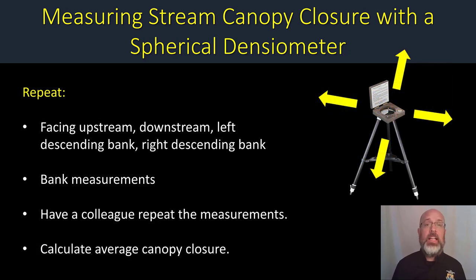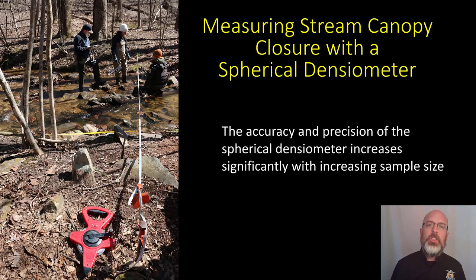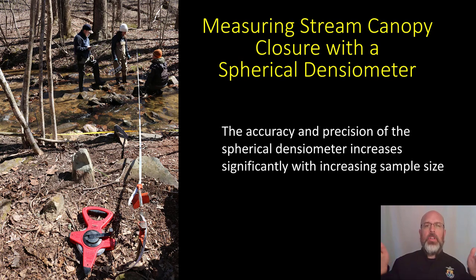Next, repeat that same measurement in all four directions. You may also consider taking those bank measurements depending on your situation, and you might want to have a colleague repeat your measurements — repeatability is improved by using the tripod. Then calculate an average canopy closure for that transect location. As with the tube densitometer, increasing the number of samples increases both the accuracy and precision, so you'll probably want to do this on multiple transects in your stream reach.